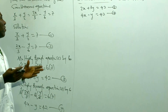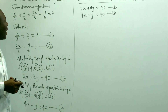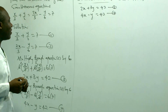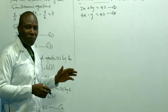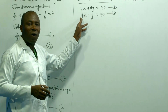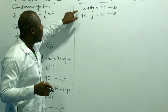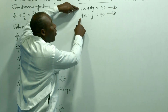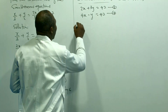Now we have equation 3 and equation 4. Which variable do you want to eliminate — x or y? You want x, that is fine. But I can see it's very clear to remove y. Since you want x, we have to ensure the coefficients of x in equation 3 and equation 4 are the same. I can see that 2 is a factor of 4, so I'm going to multiply equation 3 by 2.